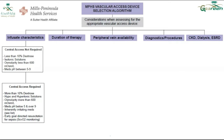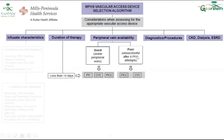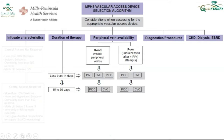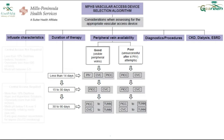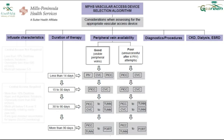The second factor is duration of therapy. For less than two weeks with good peripheral access, you can use peripheral line, CVC, or PICC. With poor peripheral access, go with PICC or central venous catheter. If duration reaches a month, it is better to use PICC or CVC — no place for peripheral line. For three months or more, shift to a tunneled catheter. For even longer, shift to a port catheter. Based on duration, you decide which catheter to use.